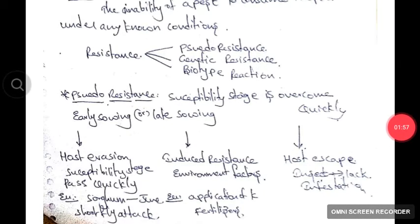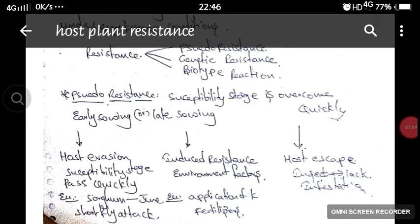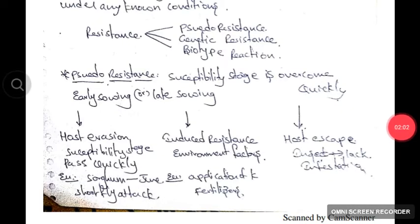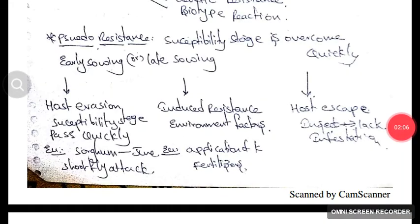In host evasion, the susceptibility stage is passed very quickly. For example, sorghum is sown in June in order to prevent the attack of shoot fly. In induced resistance, environmental factors influence the resistance — for example, the application of potassium fertilizers.